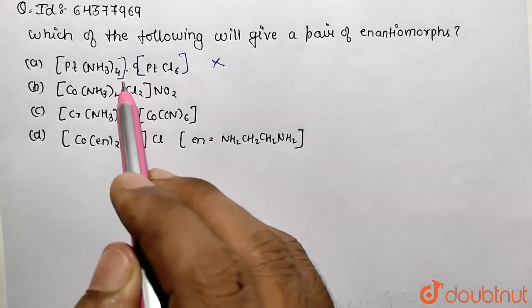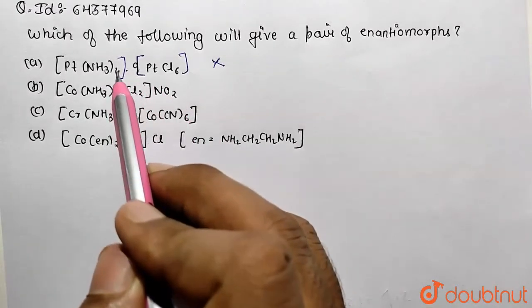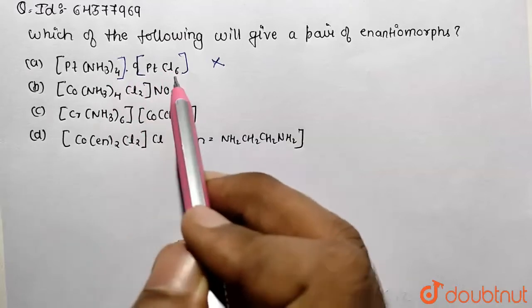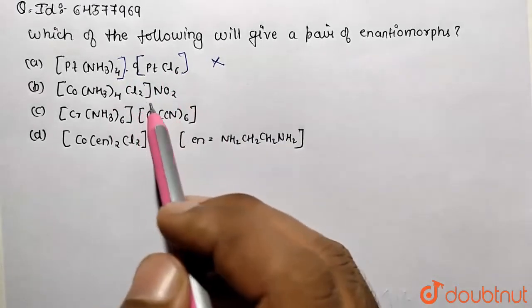This is obviously not going to be our answer because same type of ligands are being present, so how the optical isomer will be there? Because their mirror images are going to be superimposable in nature, so no optical isomerism will be shown over here.